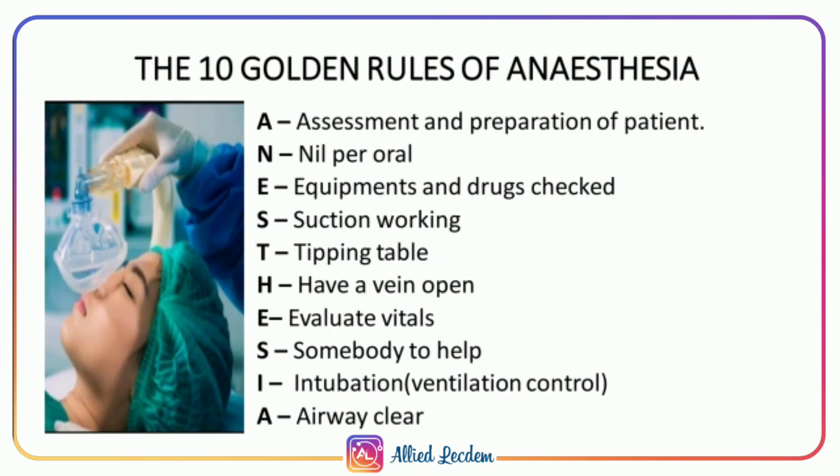Next, we'll see the 10 golden rules of anesthesia. The word ANESTHESIA is used as an acronym: A — Assessment and preparation of patient; N — NIL oral; E — Equipment and drugs checked; S — Suction working; T — Tipping table; H — Have a vein open; E — Evaluate vitals; S — Somebody to help; I — Intubation; A — Airway check.